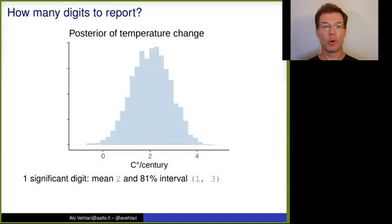But we could also use less digits, just one significant digit. Posterior mean is 2 degrees, 95 percentage interval is from 1 to 3. So I first decided that I'm reporting just one digit. And then I chose I report 1 and 3. And then I computed what's the interval. We could even round this to 80 percentage, to not give the impression of too high accuracy.